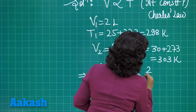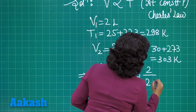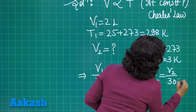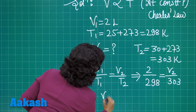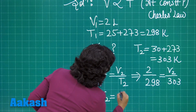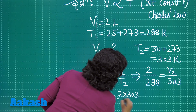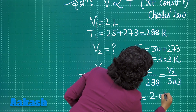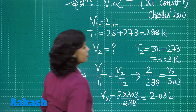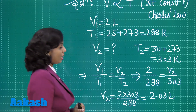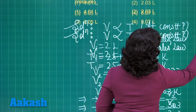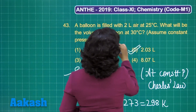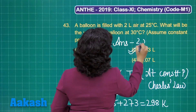Applying Charles' law: 2 divided by 298 equals V2 divided by 303. Solving this, V2 is approximately 2.03 litre. This is the final volume, and it is given in option 2 — choose this as the correct answer.